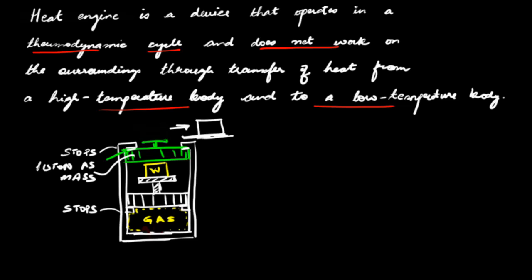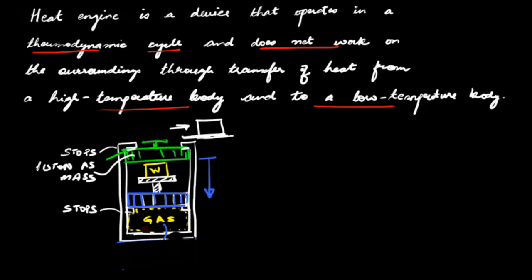In the next step, we bring a low temperature body into contact with the gas. As a result, heat transfers from the gas to this low temperature body. Consequently the gas is compressed because the piston itself has some mass, and the piston returns back to its original position — the initial state. We then remove the low temperature body, and we are back to the initial state.